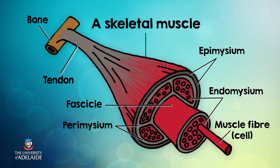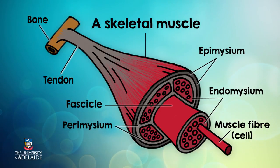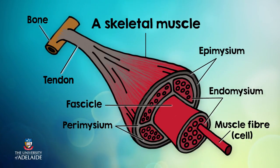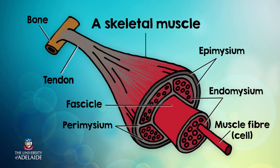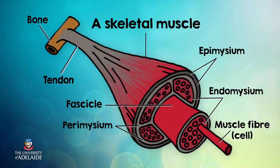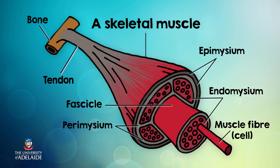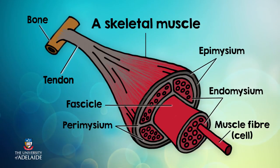In this image, can you see how the outside muscle sheath, the epimysium, is continuous with the tendon that joins the muscle to the bone? The tendon has no blood supply of its own, so that makes it very white and easy to differentiate from the epimysium which overlays blood-rich red muscle tissue.